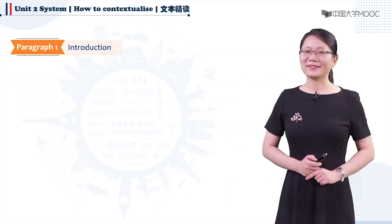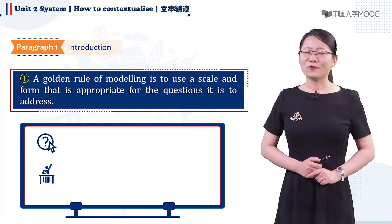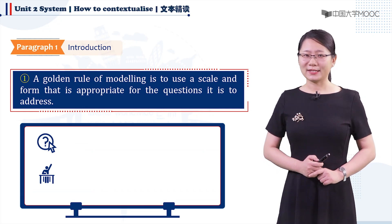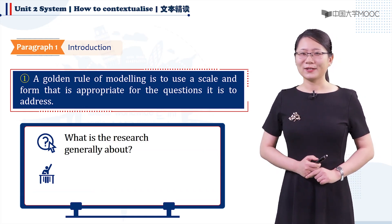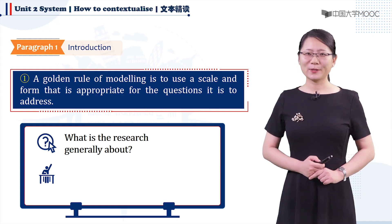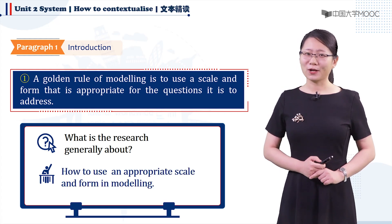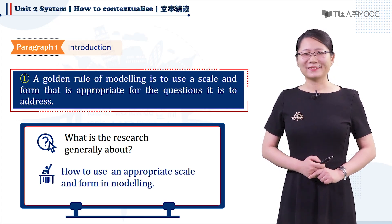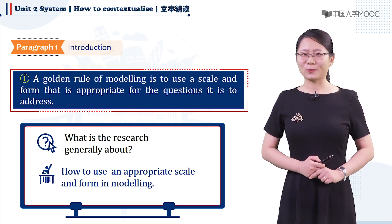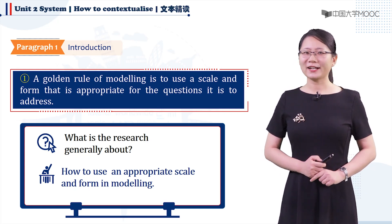This is the first sentence: 'A golden rule of modeling is to use a scale and form that is appropriate for the questions it is to address.' What is the research generally about? We could infer that this paper is about how to use an appropriate scale and form in modeling. This sentence introduces the research topic, but in a general way, as we're not sure of the modeling target yet.